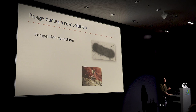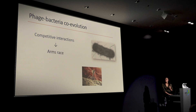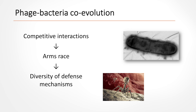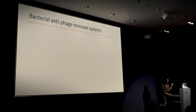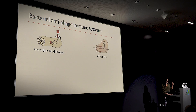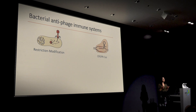Phages are found everywhere, and bacteria are constantly confronted with the threat of phage infection. These competitive interactions lead to an arms race where bacteria need to constantly defend themselves to survive, but viruses need to overcome these defenses to propagate. Some well-known defense mechanisms are restriction-modification systems and the adaptive immune system of bacteria, the CRISPR-Cas systems.